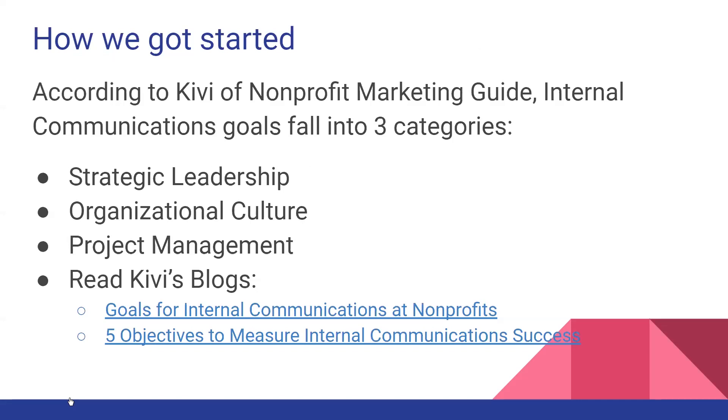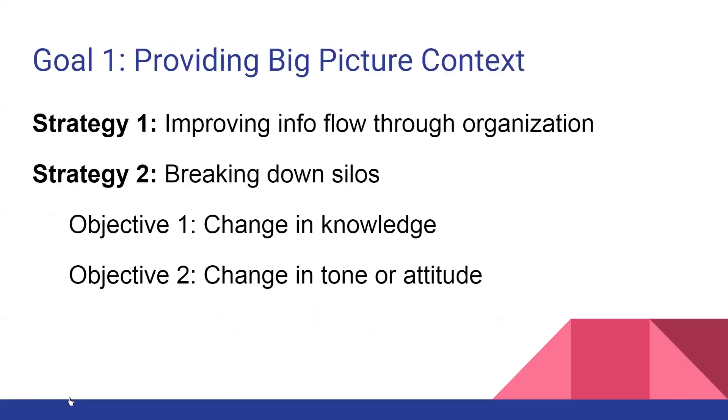Under strategic leadership, goal examples include unifying people around shared goals or implementing changes within the organization. Under organizational culture, options include motivating staff and building brand ambassadors. Under project management, suggestions include improving project coordination and fostering accountability. Kivi's blogs are free and accessible without a subscription if you want expanded information. We chose to pick one goal within each of the three categories.